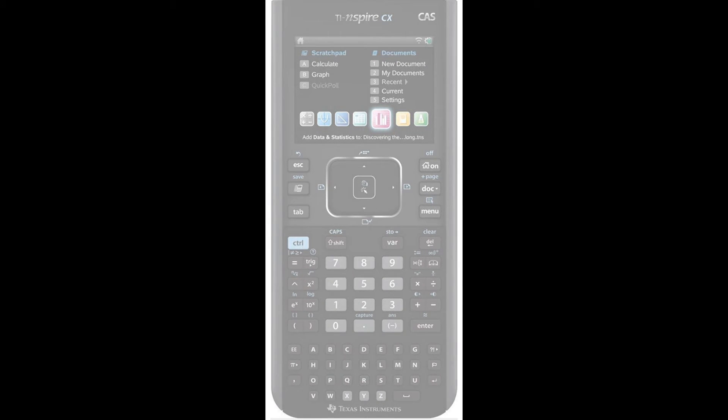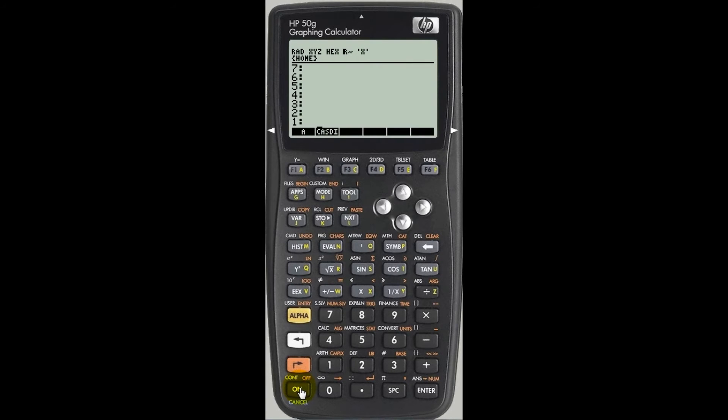Let's get started with a simple conversion. I'll convert one inch to centimeters. Notice on the HP, most buttons have a right shift or orange shift function. The 6 button is labeled units in orange. So I'll press right shift 6 to activate the units menu at the top.